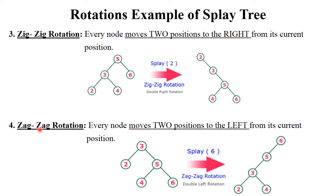Now zag-zag rotation — zag-zag means left-left or double left rotation. You need to perform zag-zag rotation on node six, so six becomes root of the tree. First left rotation: six moves to the left side, five is here, and four is here. Then again perform left rotation: six is here, five is here, and the next element is on their left side. Finally this splay tree is generated and six becomes root of the tree.